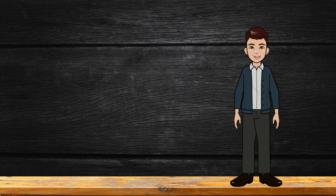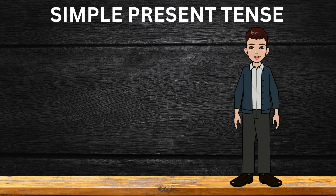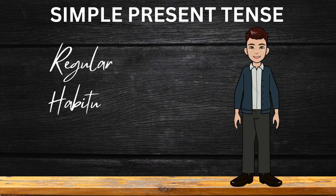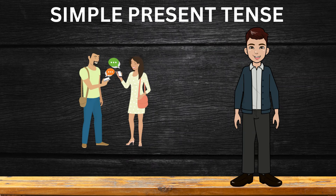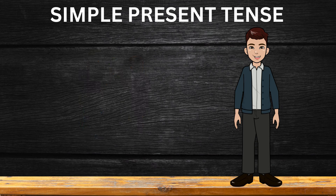Hello, everyone. Welcome to our English grammar tutorial. Today, we're diving into the world of the simple present tense. In English grammar, the simple present tense is used to describe actions or situations that are regular, habitual, or true in general. Imagine you're chatting with a friend about your routines. Simple present tense helps you express these daily habits.